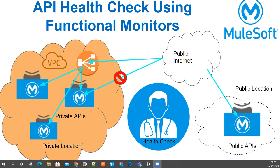Functional monitoring enables developers and operators to perform consistent testing of the functional behavior and performance of APIs deployed in either a private location or a public location. Throughout the lifecycle, functional monitoring helps us check the availability and reachability of your APIs.